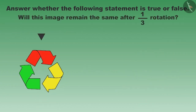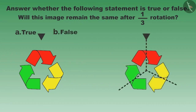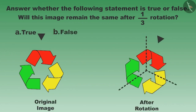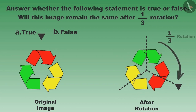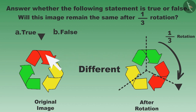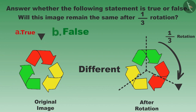Will this image remain the same after one-third rotation? Let us rotate it by one-third and see. This image does not match the earlier one. Since this image is colorful, we have to focus on the order of the colors also. All these parts have different colors, thus this is a false statement.